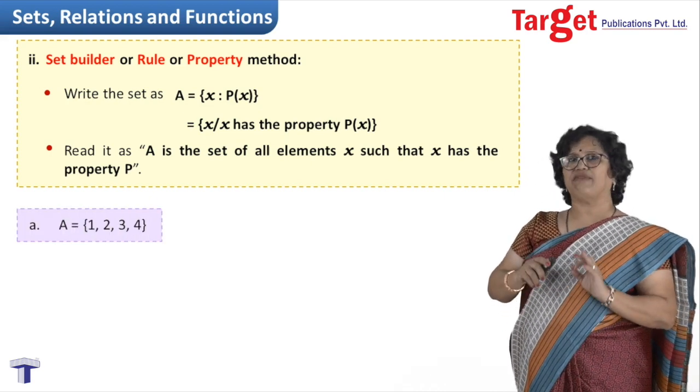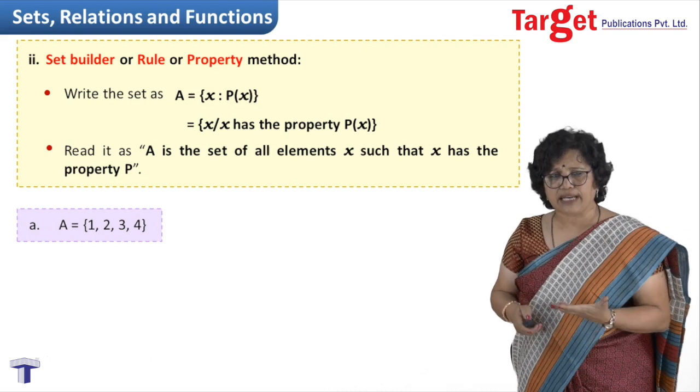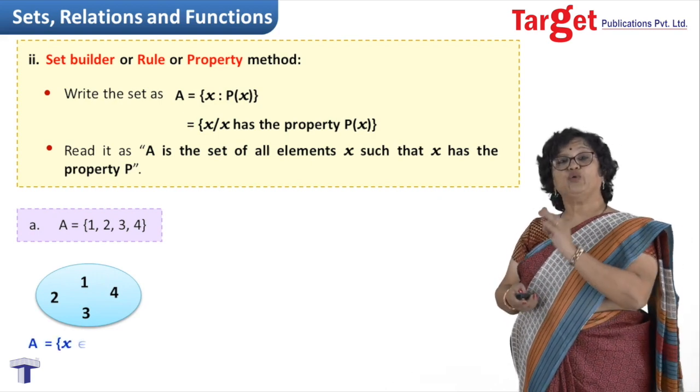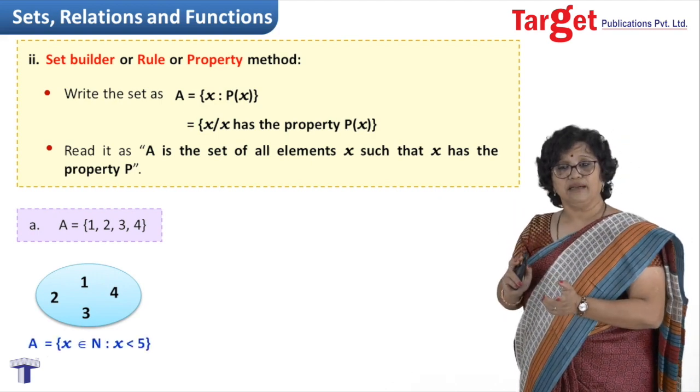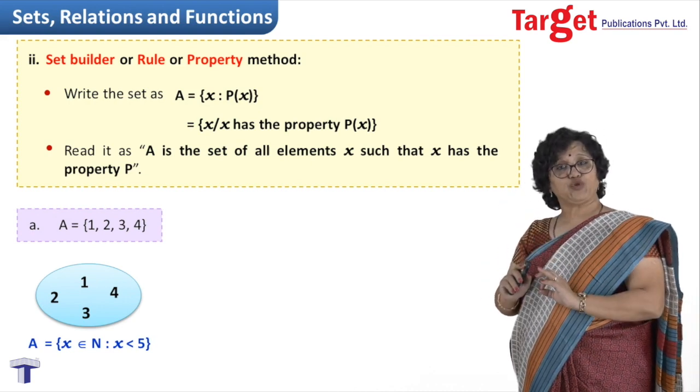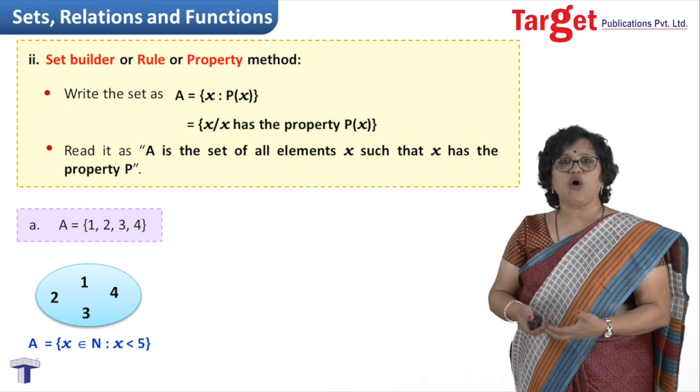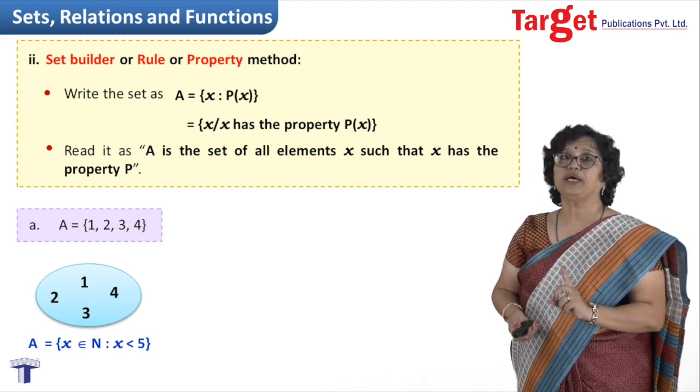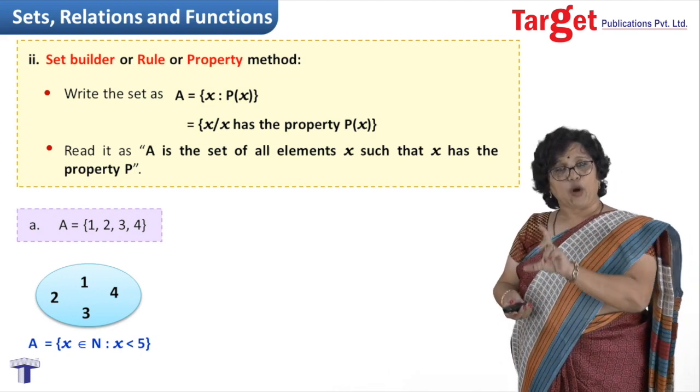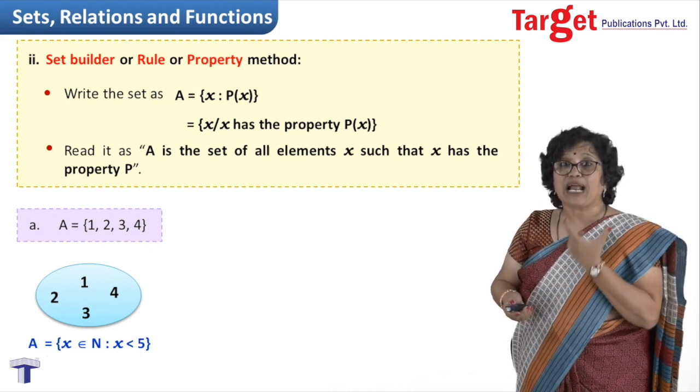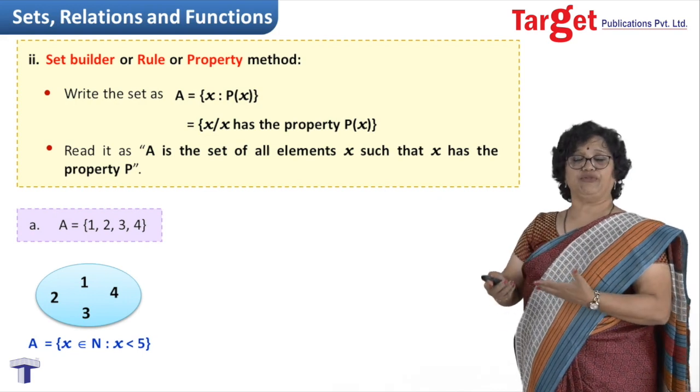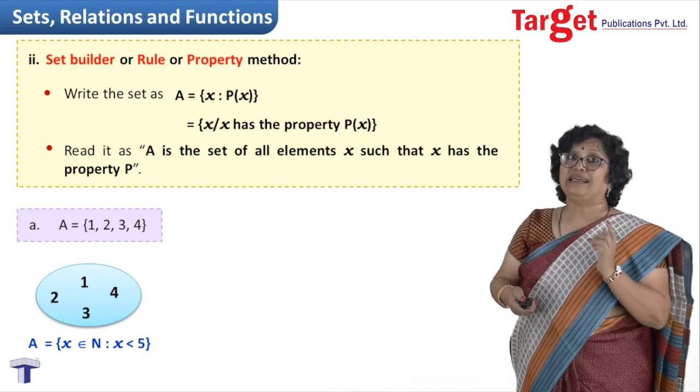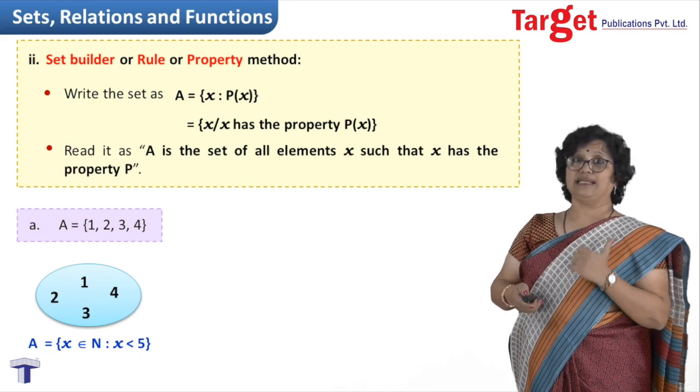Now if I have a set like 1, 2, 3, 4, one method would be that you show 1, 2, 3, 4 lying somewhere. If I want to use now this property method, then I will write curly bracket, x belongs to N, x less than 5. Now this is one of the ways of writing 1, 2, 3, 4. You can actually derive your own method also, but make sure whatever property you write, that property will give only 1, 2, 3, 4 as your answer. I have written here x less than 5, and x being a natural number. By writing natural number, I made sure that I am not getting numbers less than 0.